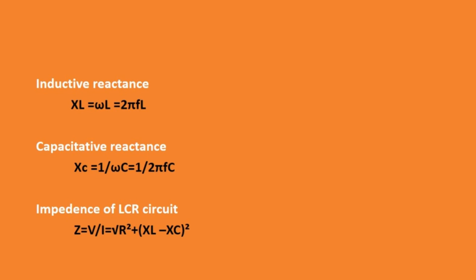Next is inductive reactance: XL equal to omega·L, where omega equal to 2·pi·F, so XL equal to 2·pi·F·L. Capacitive reactance: XC equal to 1 by omega·C equal to 1 by 2·pi·F·C. Next is impedance of an LCR circuit: Z equal to V by I, calculated as the square root of R² plus (XL minus XC)². The unit of impedance is ohm.